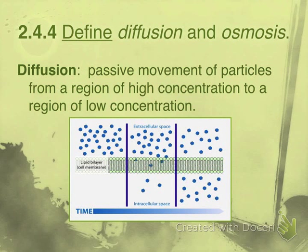Assessment statement 2.4.4 asks us to define diffusion and osmosis — both are types of movement for different molecules. Diffusion is the passive movement, meaning no energy required, of particles from a region of high concentration to a region of low concentration. Diffusion can refer to any molecule. A common example is perfume: if someone sprays perfume at their locker, eventually it will diffuse from that area of high concentration to an area of lower concentration further away.